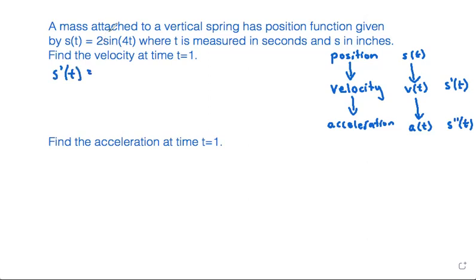To take the derivative of 2sin(4t), recognize this as having an outside function (sine) and an inside function (4t). Taking the derivative of the outside function: 2cos(4t), leaving the inside the same. Then multiply by the derivative of the inside function, which is 4. So the whole thing simplifies to 8cos(4t).